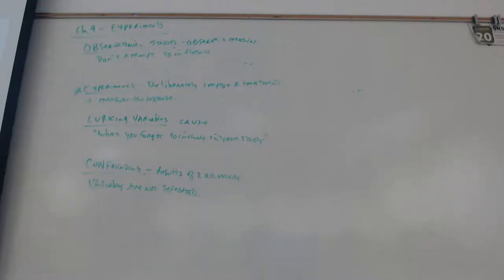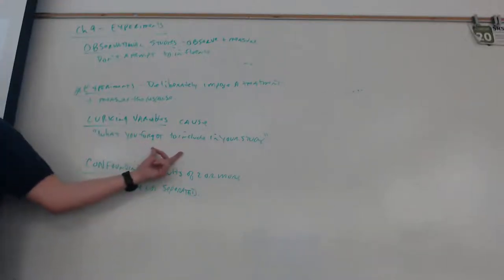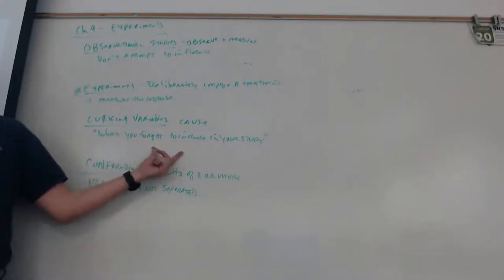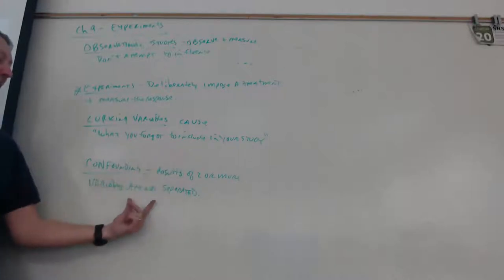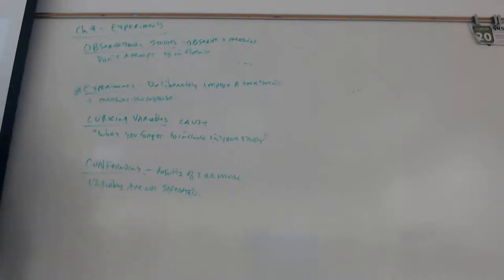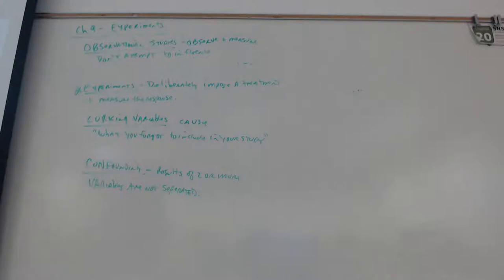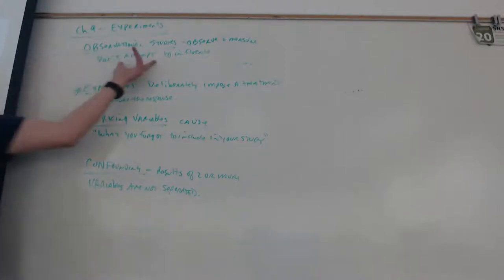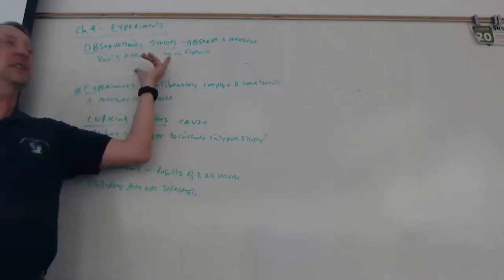The lurking variable in this case was smoking — it was not included. The smoking was combined with the sugar, so it looked like sugar was causing the heart disease when in reality it was the smoking. That can be an issue with observational studies — you can't always distinguish what's causing the problem.